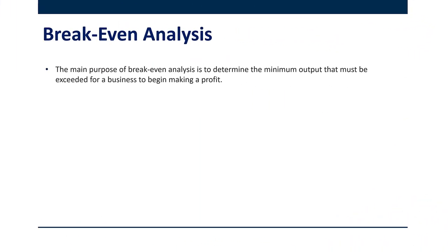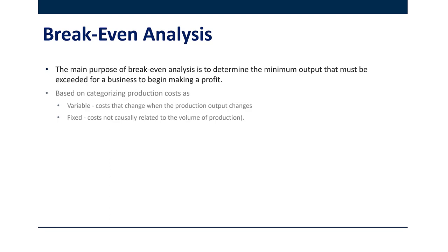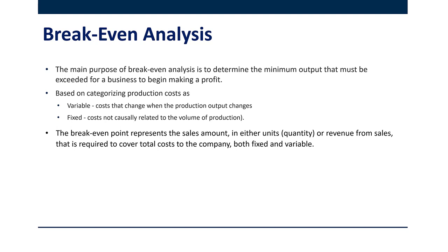Breakeven analysis is used primarily to determine the minimum output that must be exceeded for a business to begin making a profit. It's based on categorizing production costs as either variable costs, which change when the volume of production changes, or fixed costs, which are not related to changes in production. The breakeven point represents the sales amount — in either quantity units or revenue — required to cover the total cost to the company, both fixed and variable.